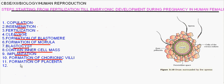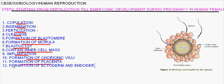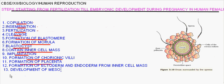Eleventh step is formation of placenta. Twelfth step is formation of ectoderm and endoderm from inner cell mass. Thirteenth step is development of mesoderm in between these two layers.